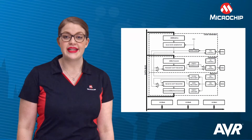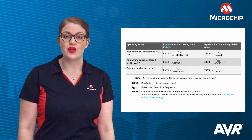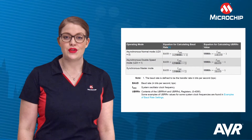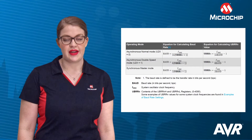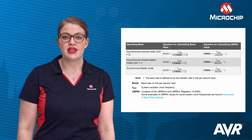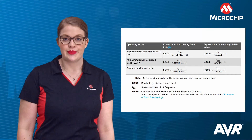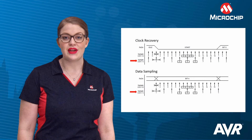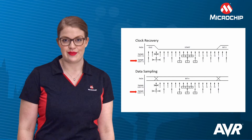When operating as master, internal clock generation is provided by the high-resolution baud rate generator. Double speed is available in asynchronous mode, however this will decrease the number of samples used by the receiver during clock recovery and data sampling.